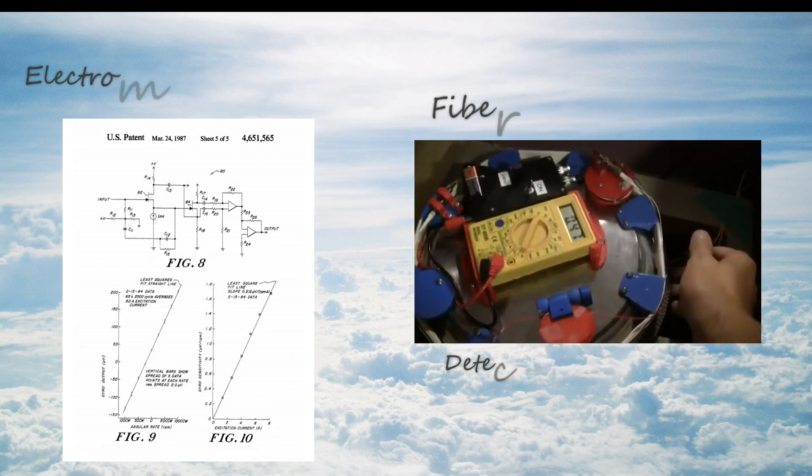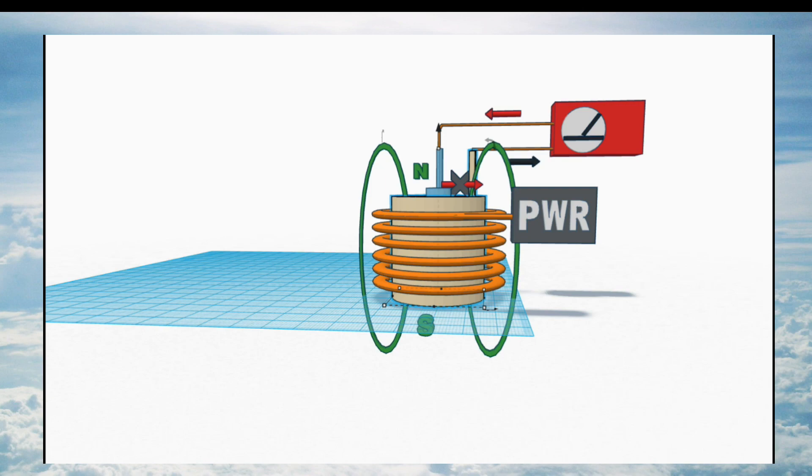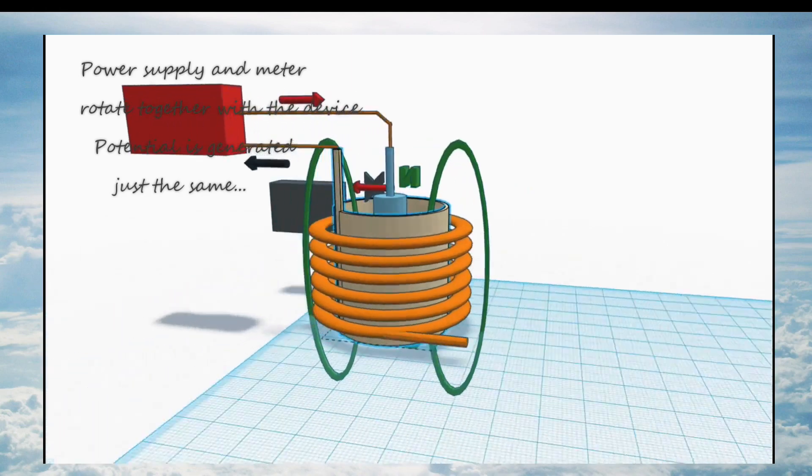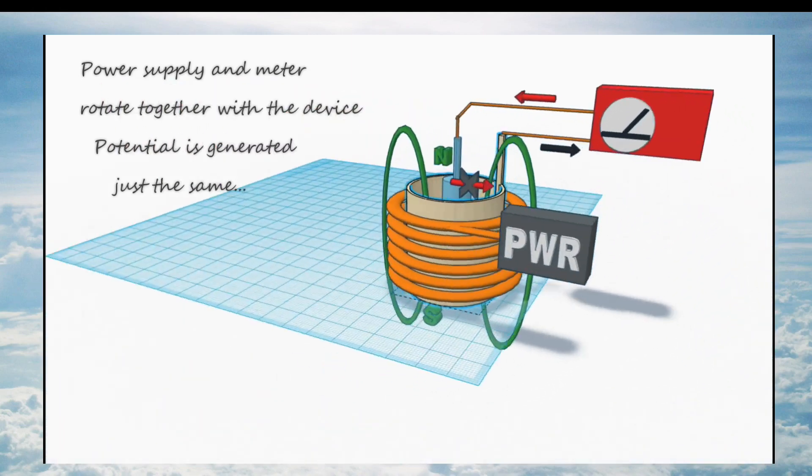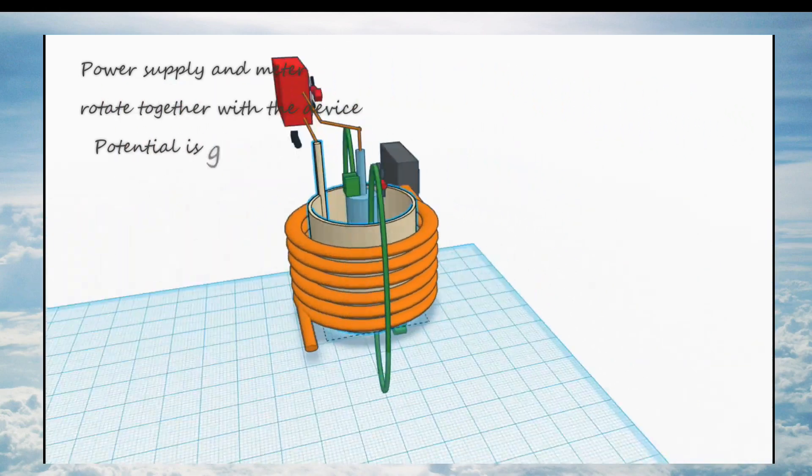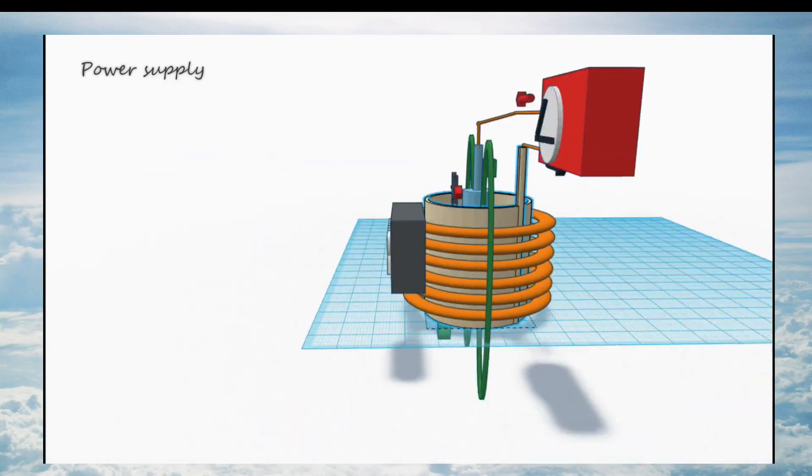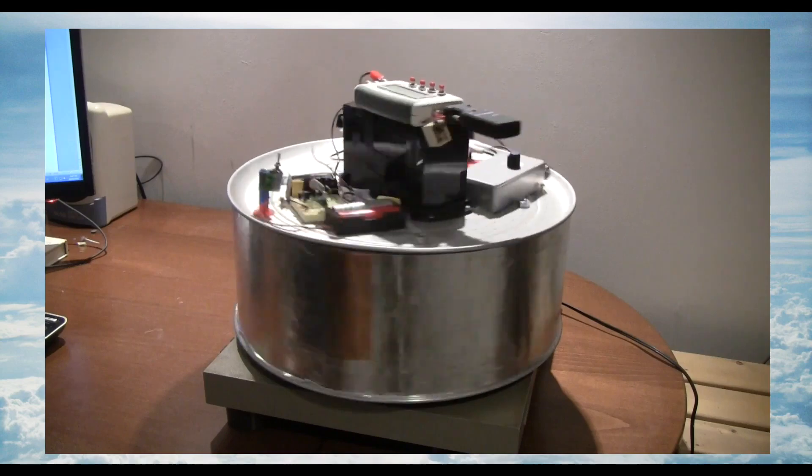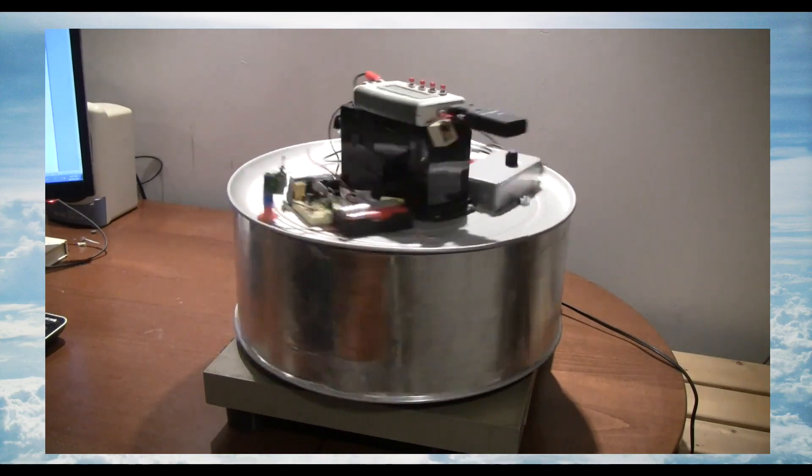Finally, the Keene patent describes the device as working both with a power supply rotating with the gyroscope, or an external power supply, whichever is more convenient. No argument can be made that induction occurs because the power supply lines are cut by a hypothetical rotating magnetic field.